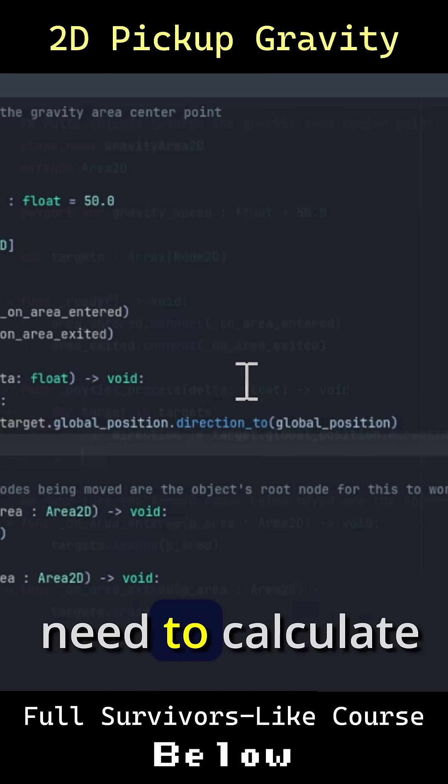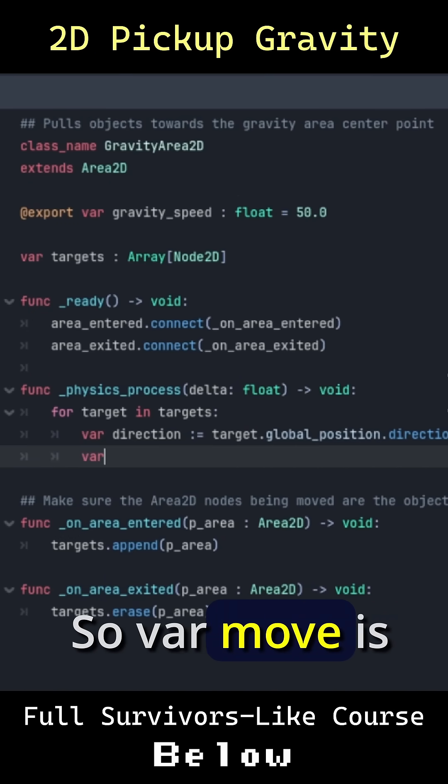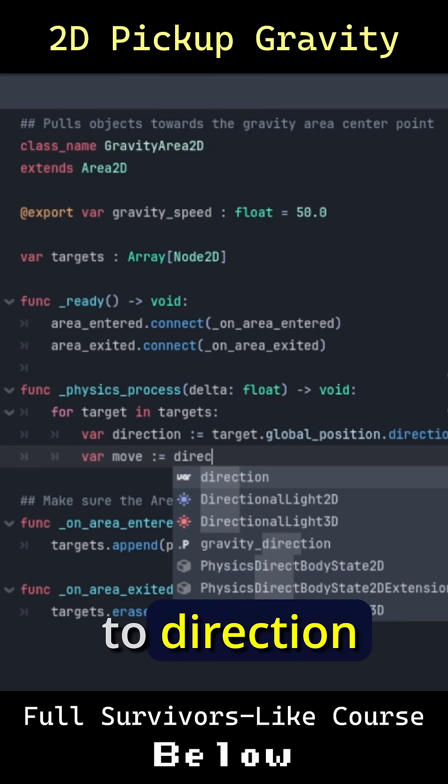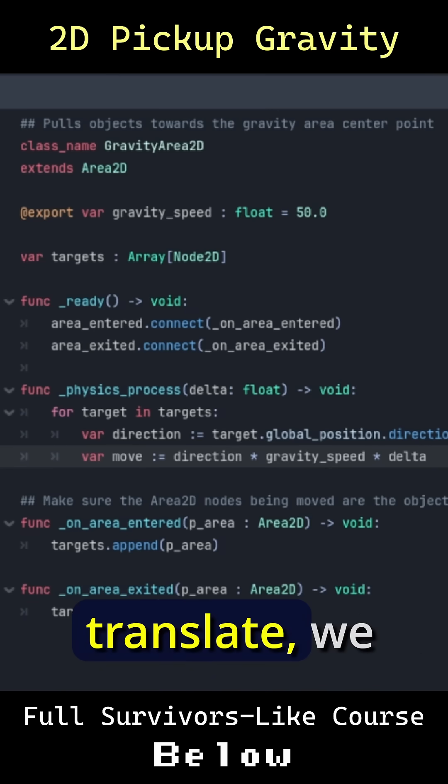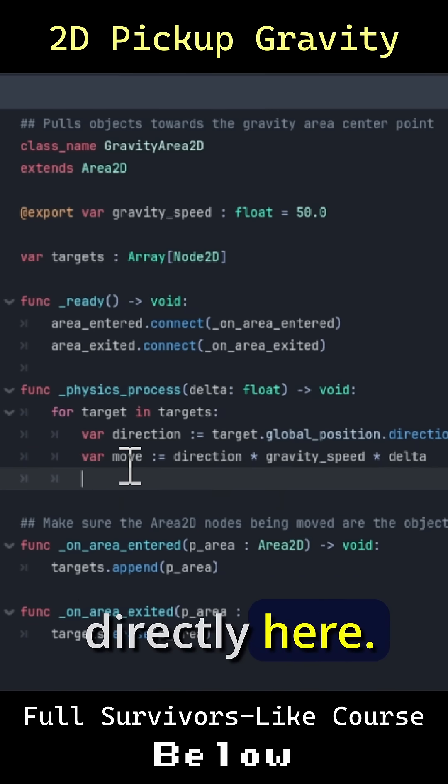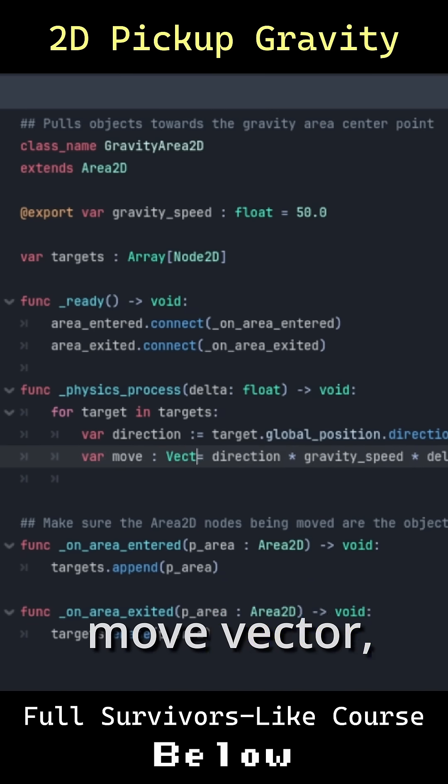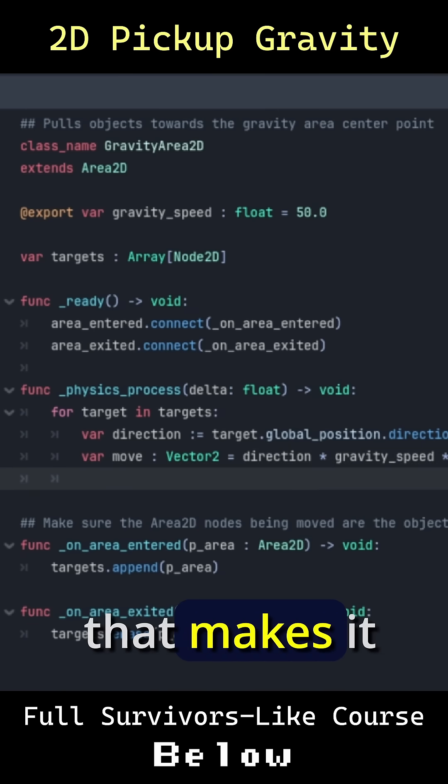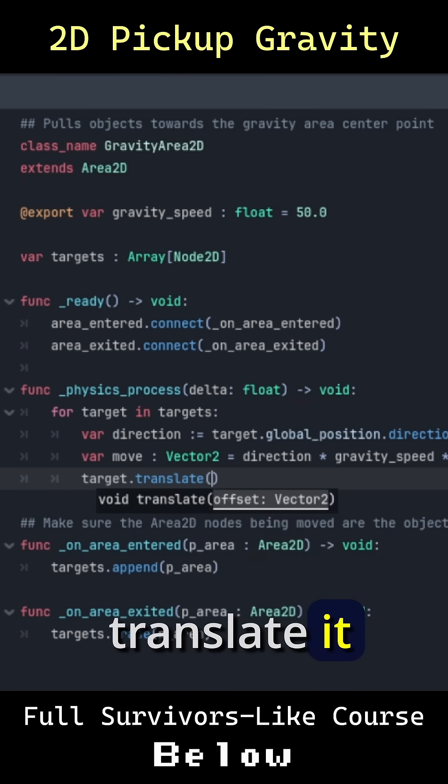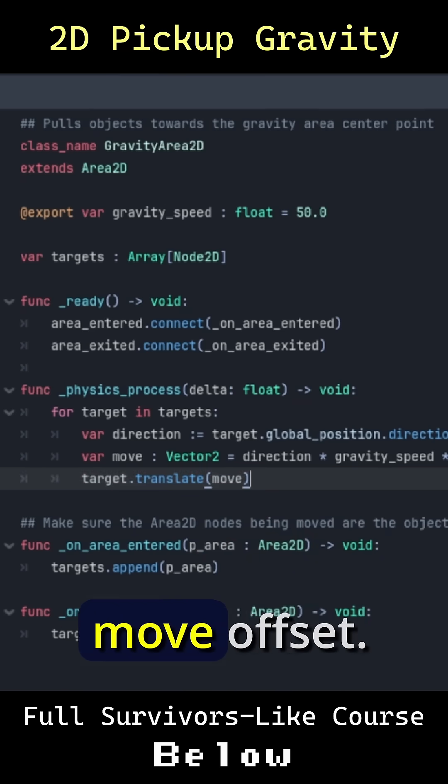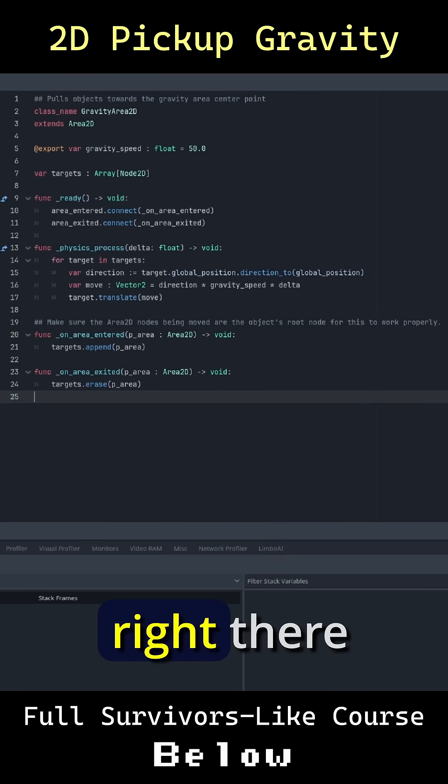And then we just need to calculate our move amount. So var move is going to be equal to direction times gravity_speed times delta. Since we're using translate we need to factor that in directly here for the final move vector. We could say this is a Vector2D if that makes it more clear. And then we want to take the target and translate it across the screen by the move offset. So this is essentially our gravity script right there.